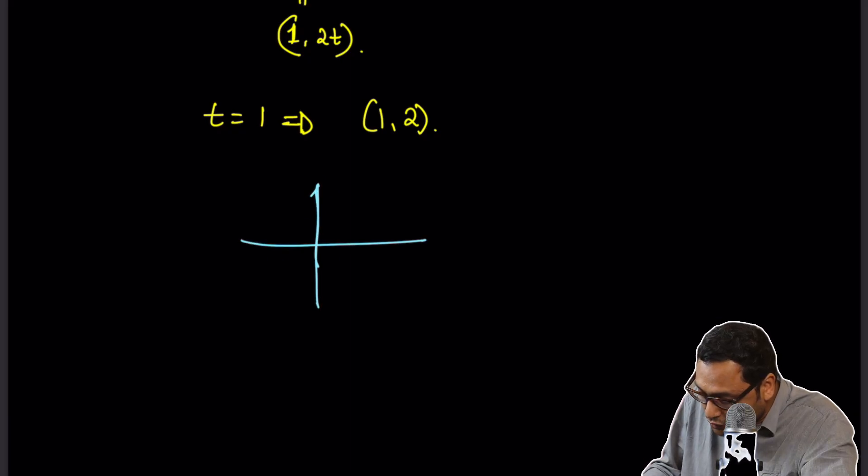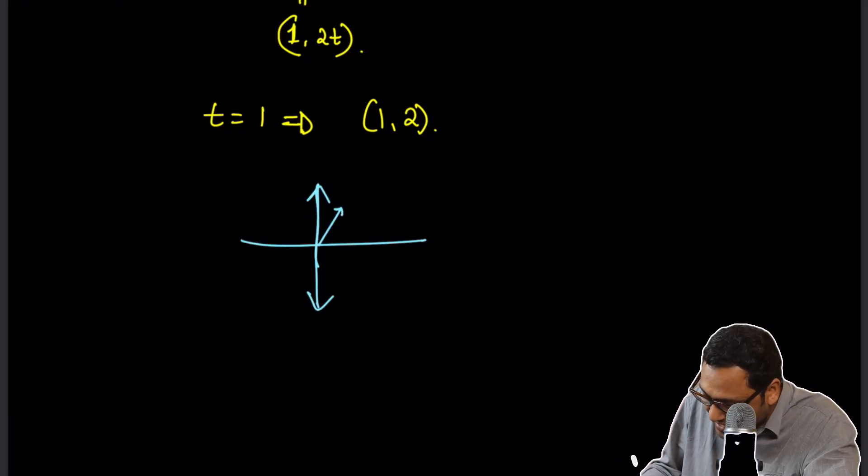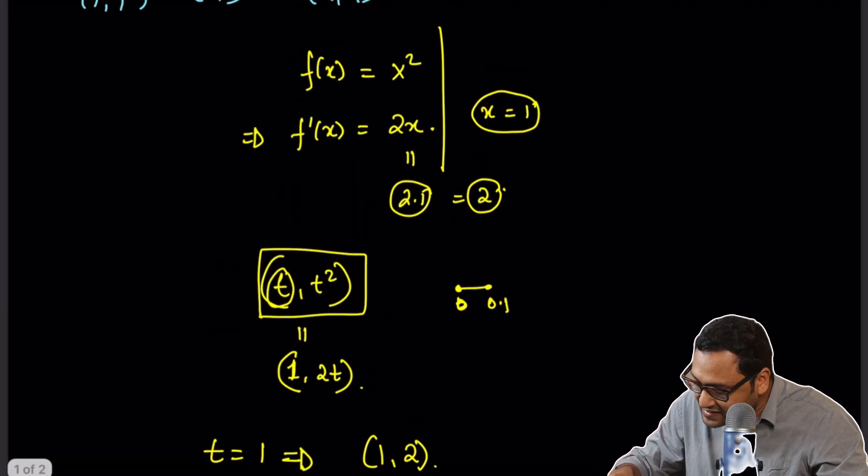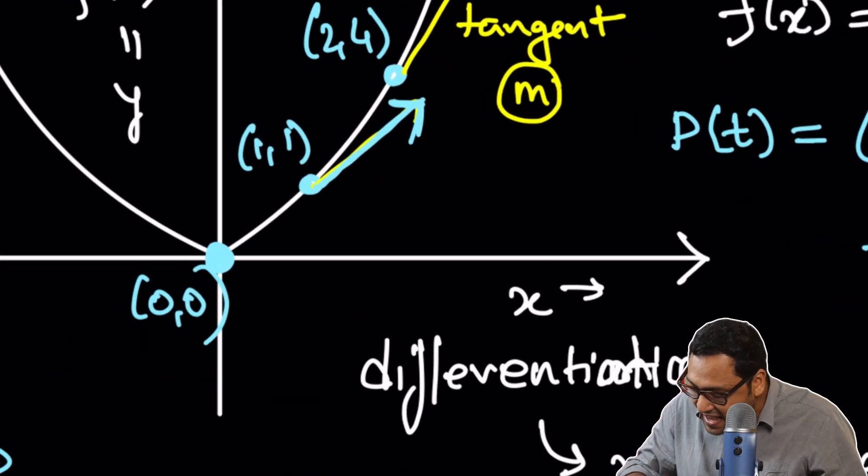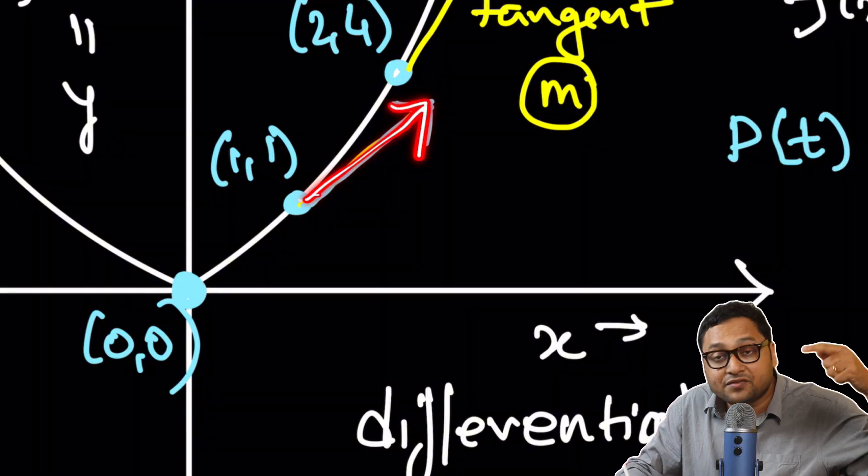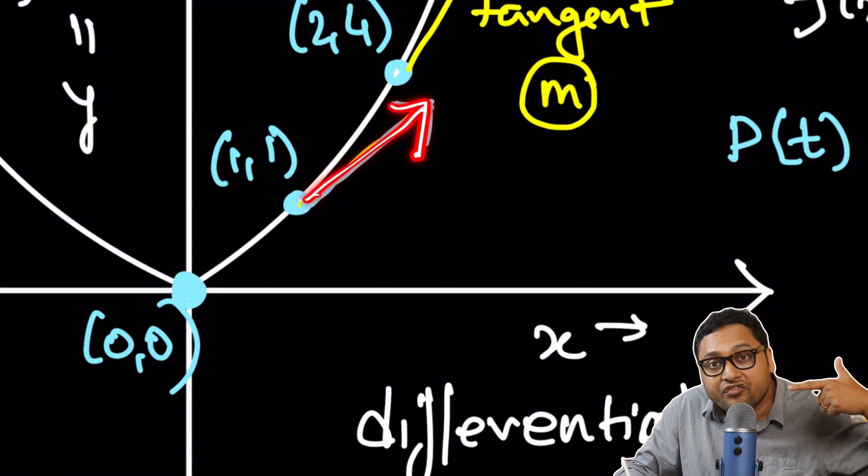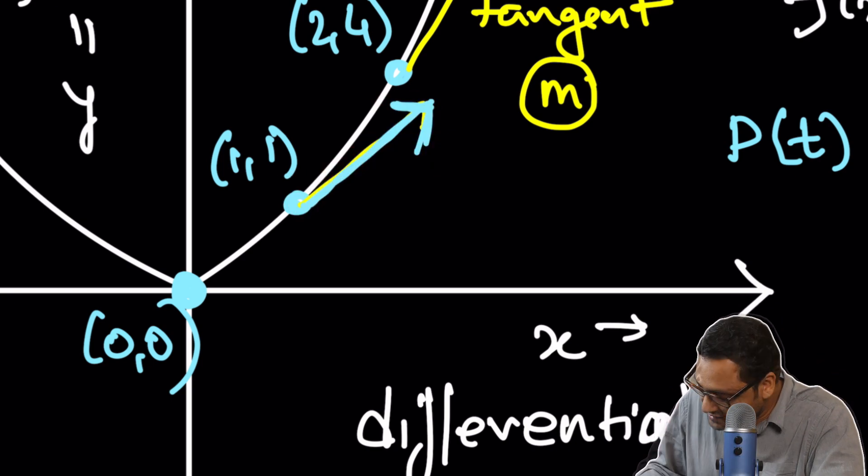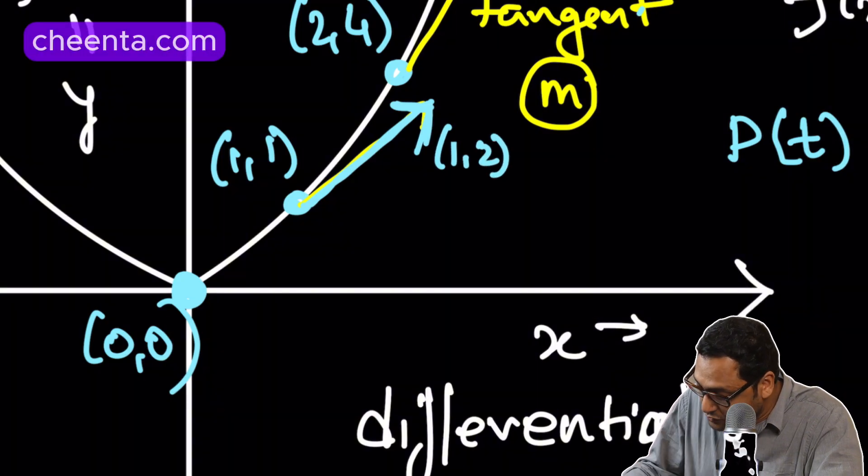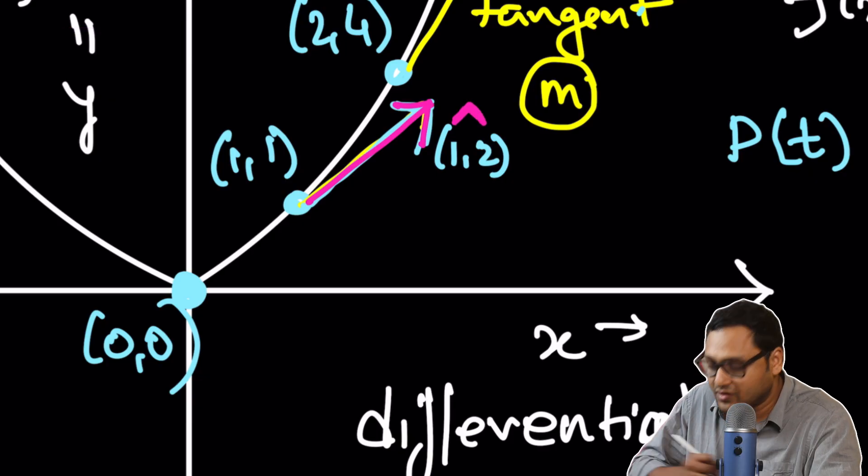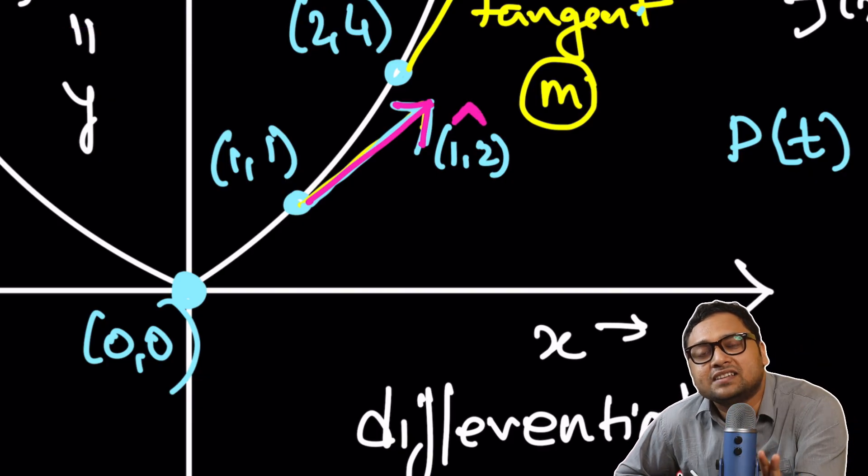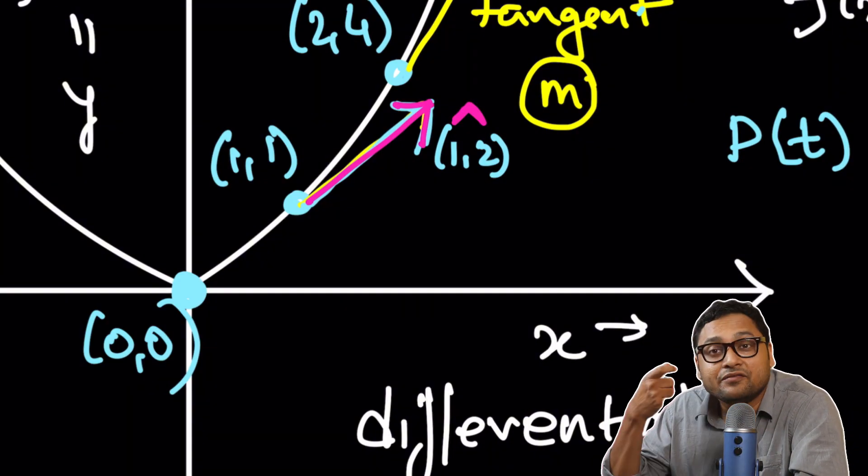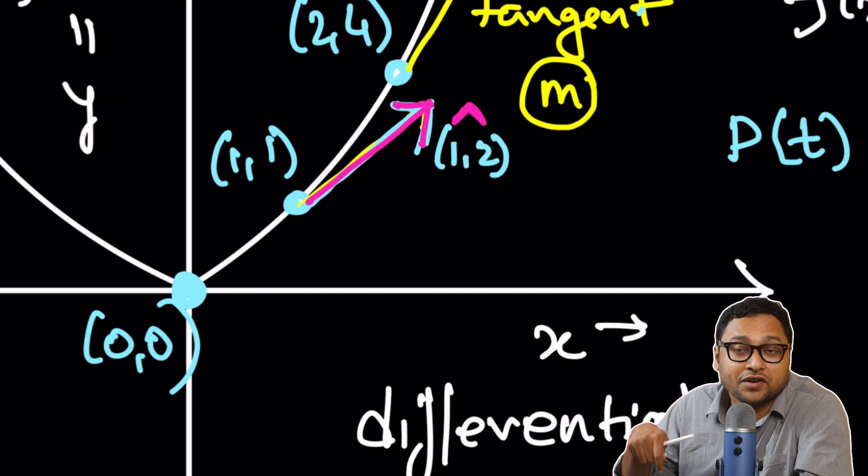What is (1, 2)? If I take a separate coordinate system, (1, 2) is an arrow like this. I can copy this arrow and paste it here. This arrow, which was copied from another plane, tells you how fast this particular point is moving and in which direction it is moving. This arrow denotes the vector (1, 2). So, for every point, you can calculate a vector which represents the velocity of the point at that particular point of the curve.